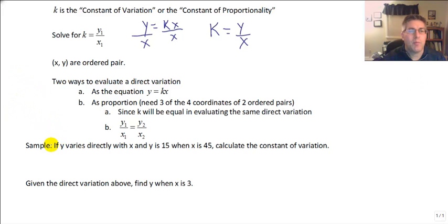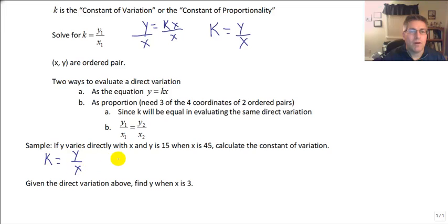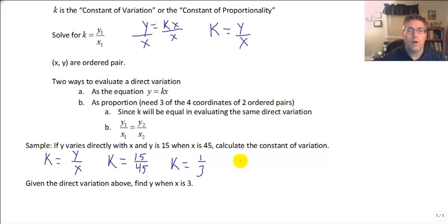Let's take a look at this sample problem. If y varies directly with x, and y is 15 when x is 45, calculate the constant of variation. We want to calculate k. If we know k equals y over x, then k equals 15 over 45, so k equals 1 third. This particular direct variation follows the equation y equals 1 third x.